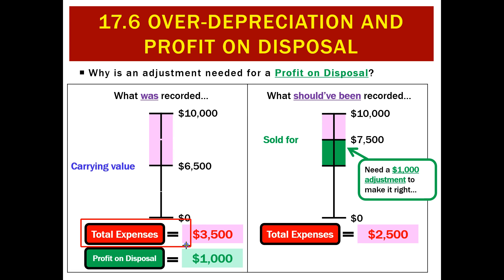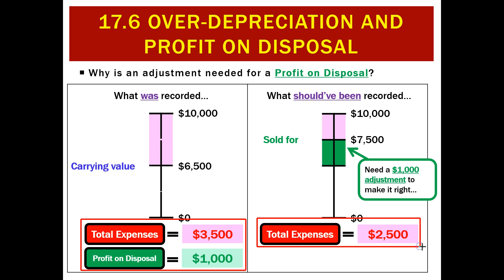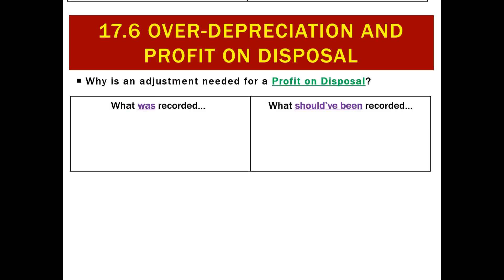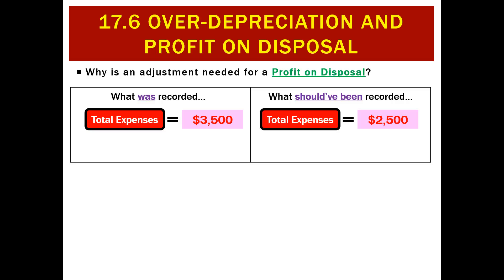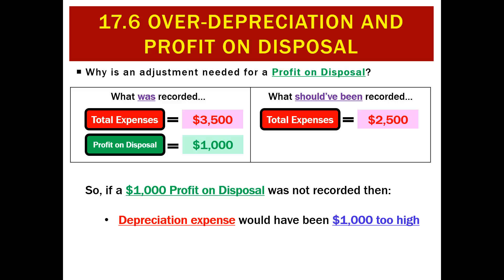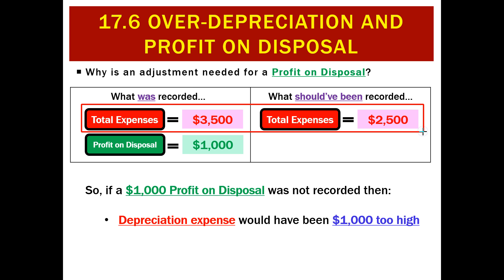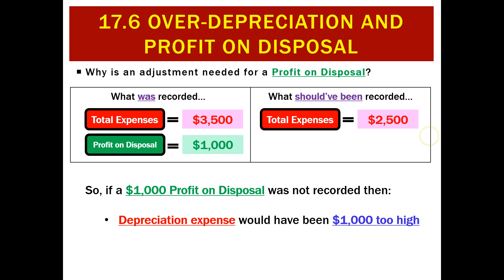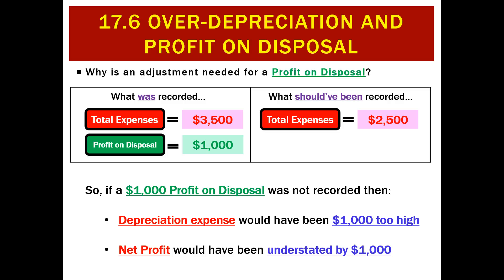So now, if we've got a $3,500 expense and we fix it with a $1,000 revenue, that will equal overall a net level of expenses of $2,500. That's what was recorded versus what should have been recorded — we did too much and should have only recorded $2,500. So to fix it, we make a $1,000 adjustment called profit on disposal, which is a revenue. If we didn't do that, our expense would have been $1,000 too high, depreciation expense would be overstated, and net profit would have been understated by $1,000.